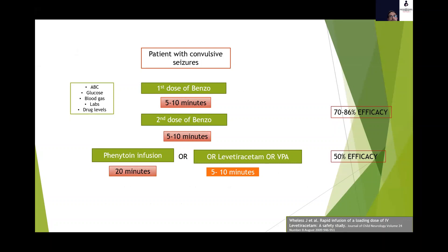The conclusion from the ESETT trial is that across age ranges, levetiracetam, fosphenytoin, or valproate can be used with equal treatment success of around 50 percent; any of these can be considered the first-choice second-line medication. A modern status epilepticus protocol looks like this: give two doses of benzodiazepines with an interval of five to ten minutes, which should work in 70 to 86 percent of patients if given within 20 minutes of seizure onset. For refractory cases, use phenytoin, levetiracetam, or sodium valproate with 50 percent efficacy. One important point: phenytoin infusion takes at least 20 to 30 minutes, whereas levetiracetam can be given over as little as five minutes, saving valuable time in this time-critical emergency.